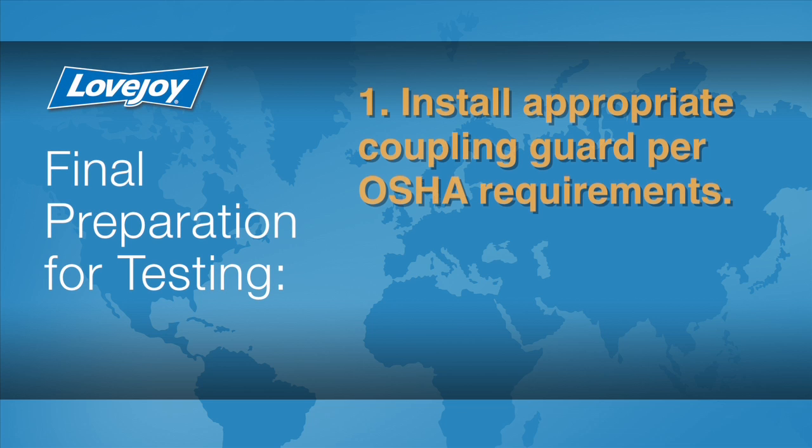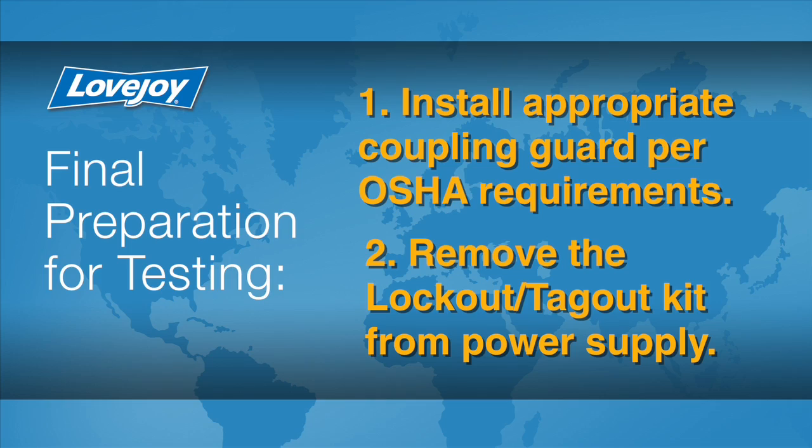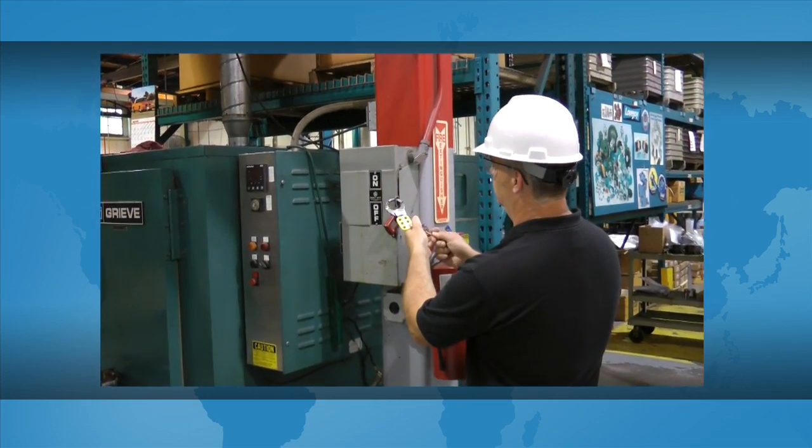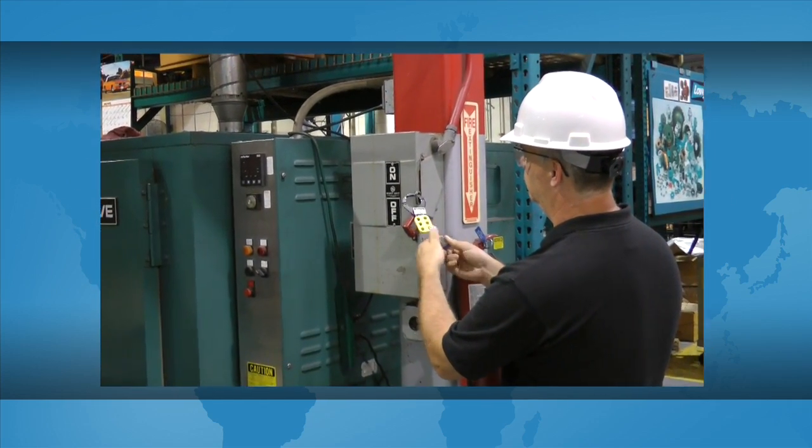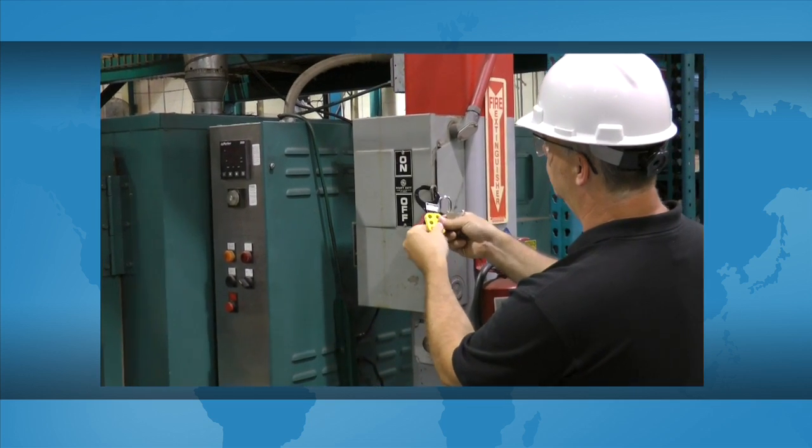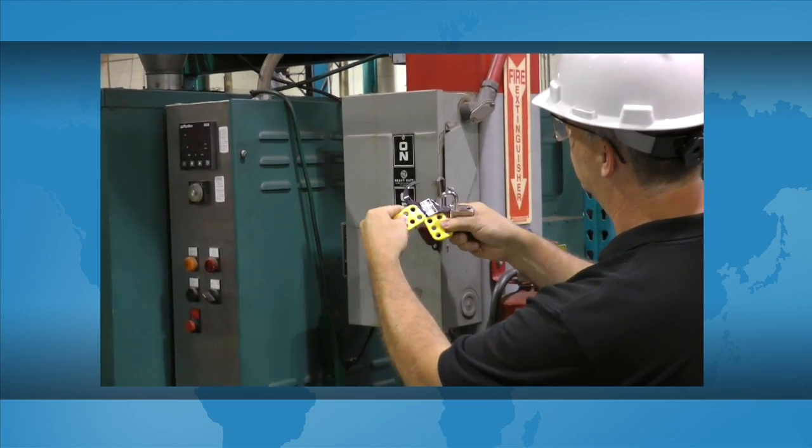Install the appropriate coupling guard per OSHA requirements and remove the lockout tagout kit from the power supply. The equipment can then be started up and tested.